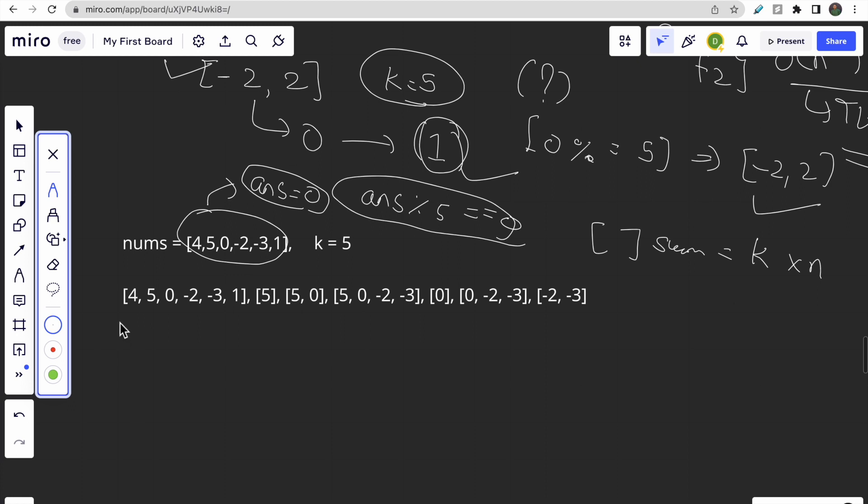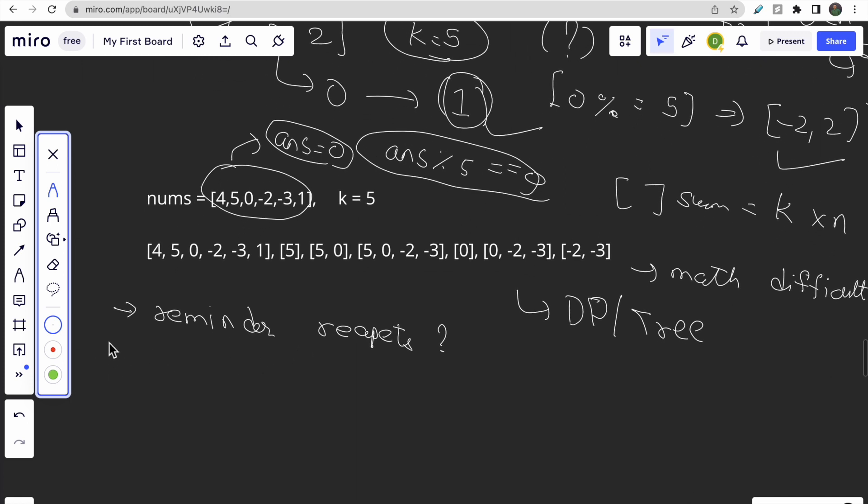So based on this, that is one fact I want to tell you that whenever the remainder repeats, we get our answer. Our forming an intuition for this type of question that are based on mathematical facts is difficult. Because there is only one specific approach to solve this question. And if you know that approach, then only it will be easy. This is not any typical DP or tree question that we can form an intuition. So forming an intuition or thought process how to solve this type of question is difficult. That's why I am mainly talking about the approach here.